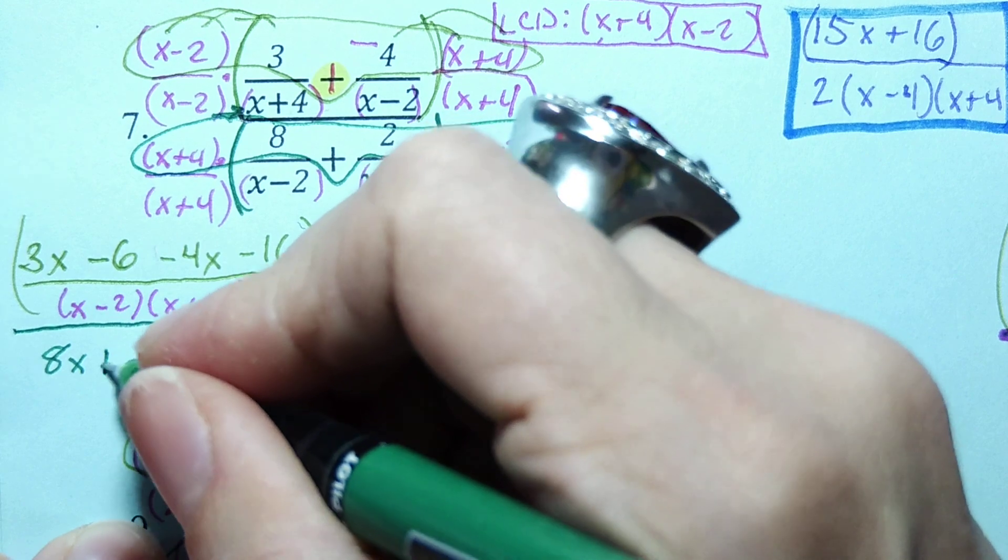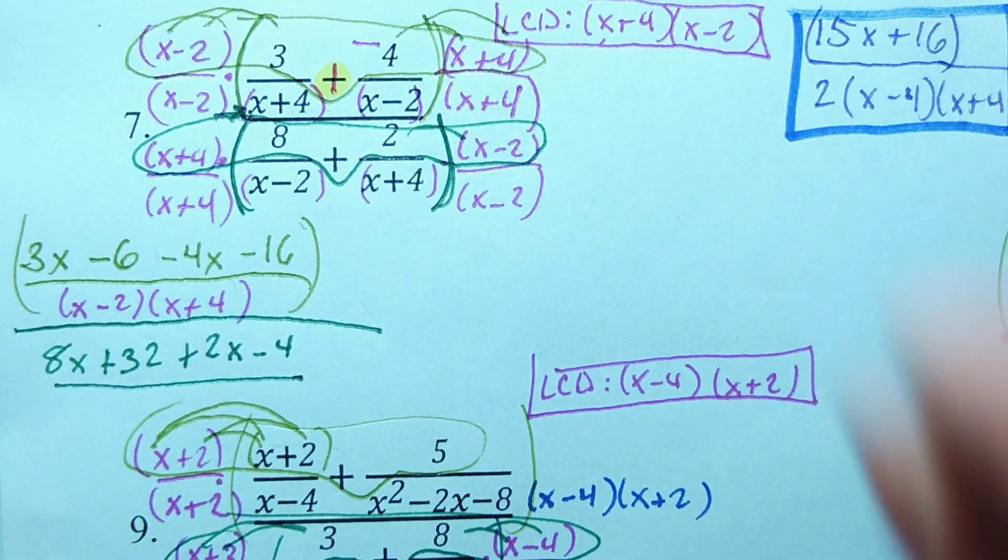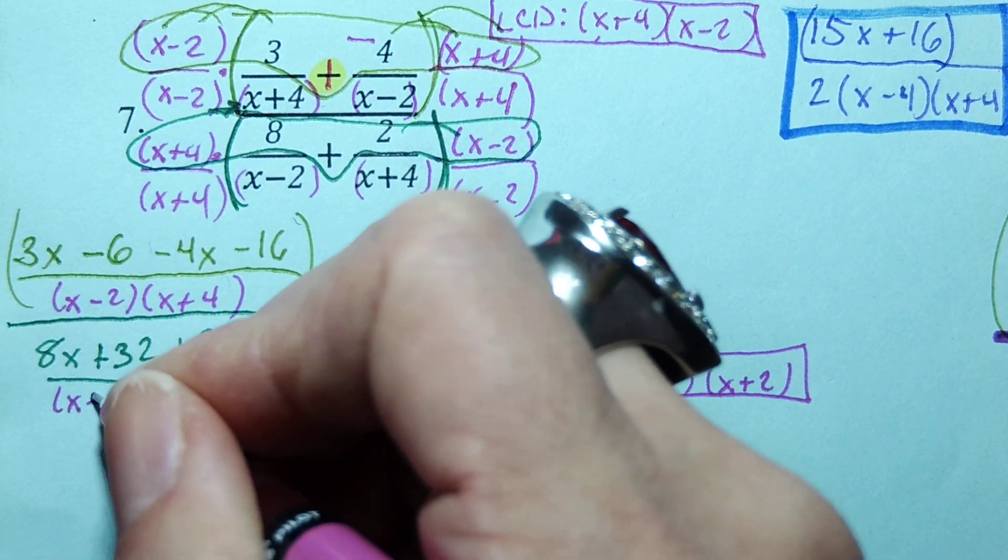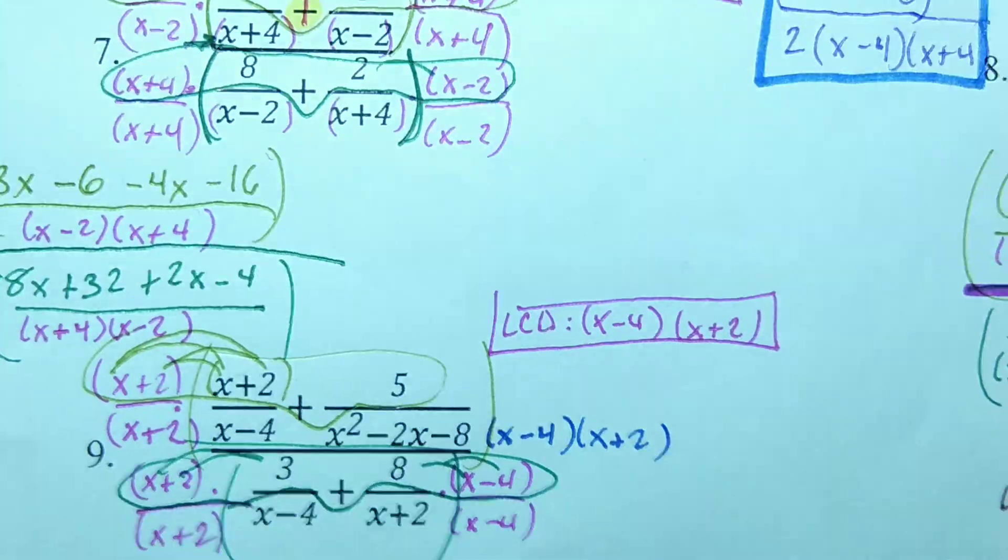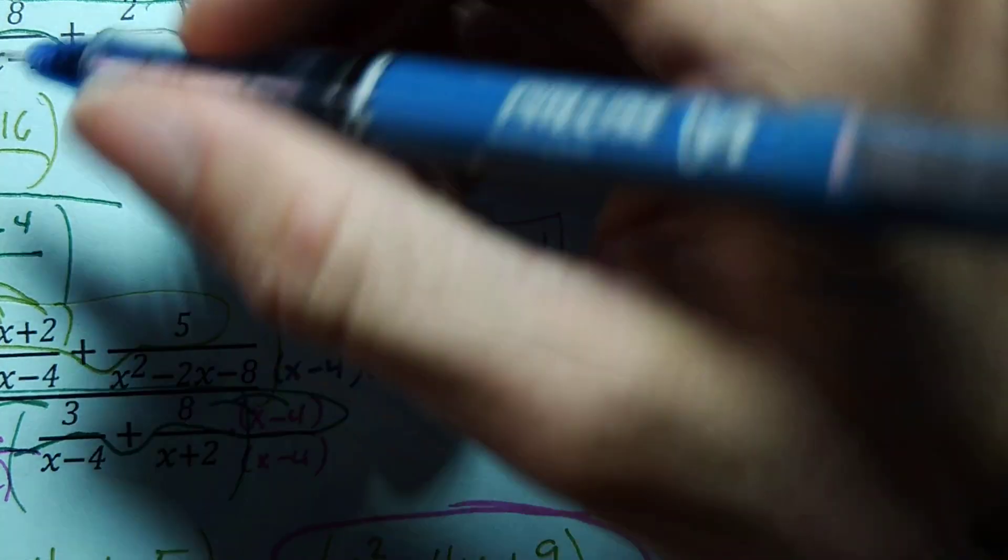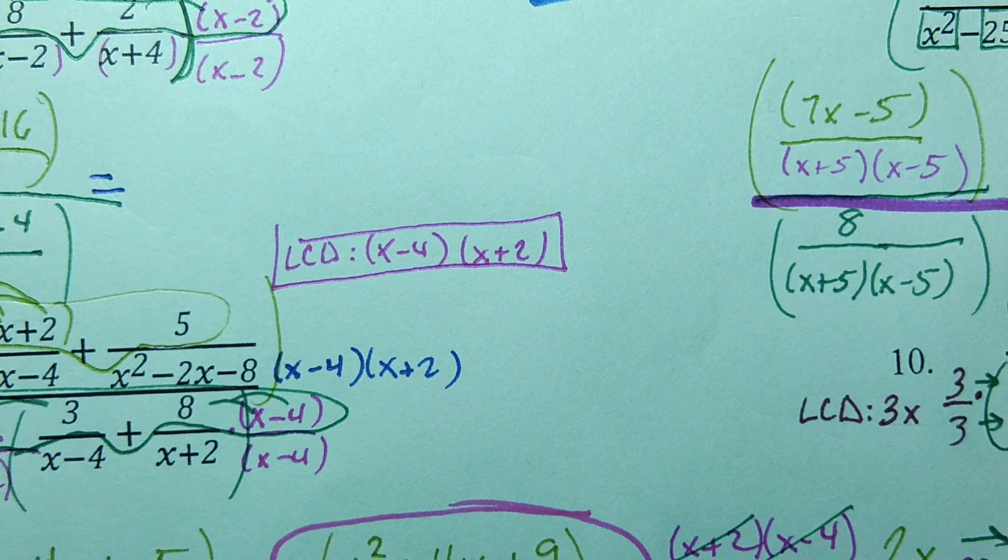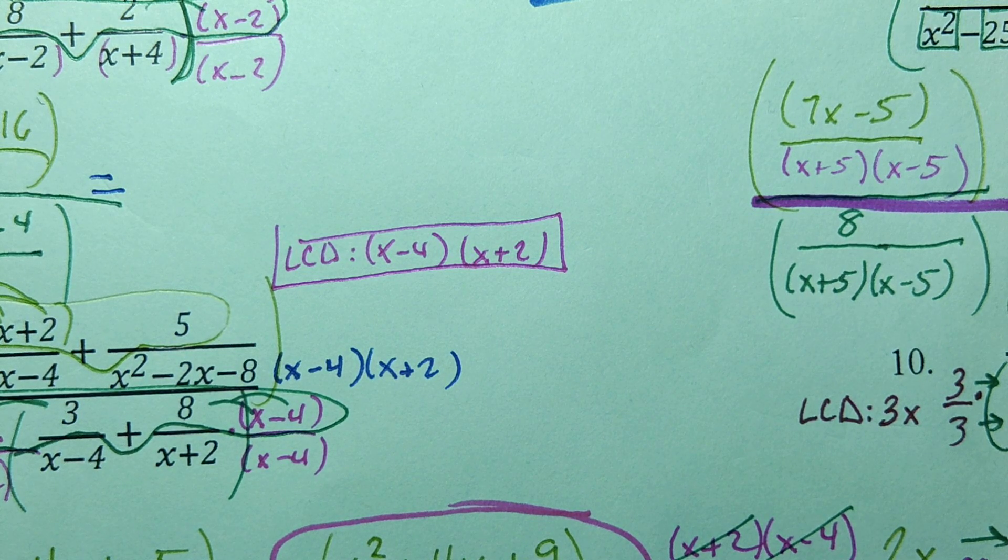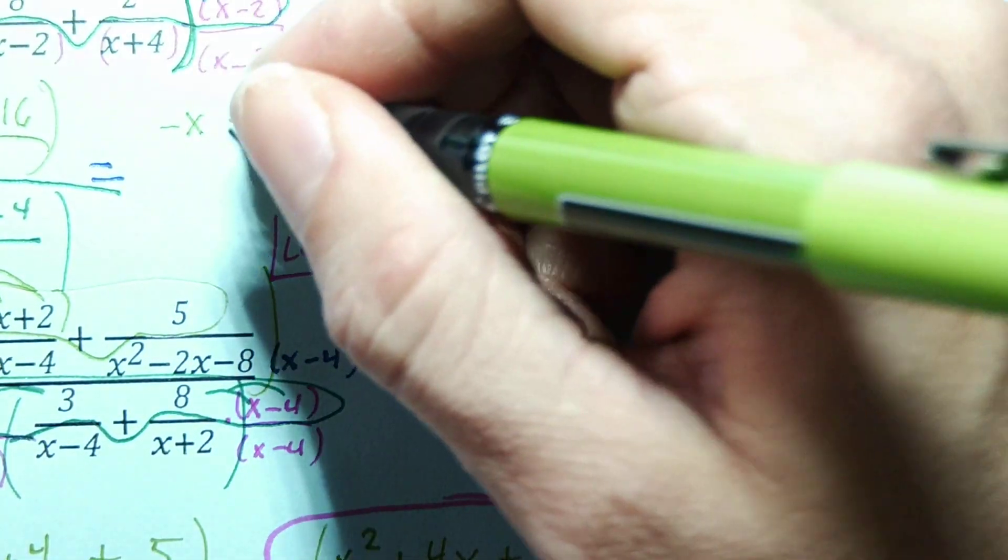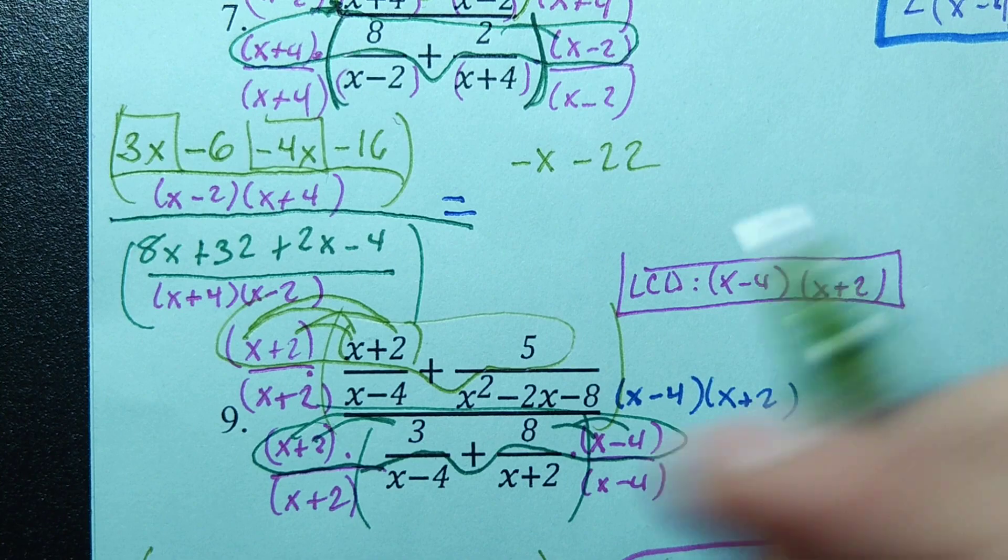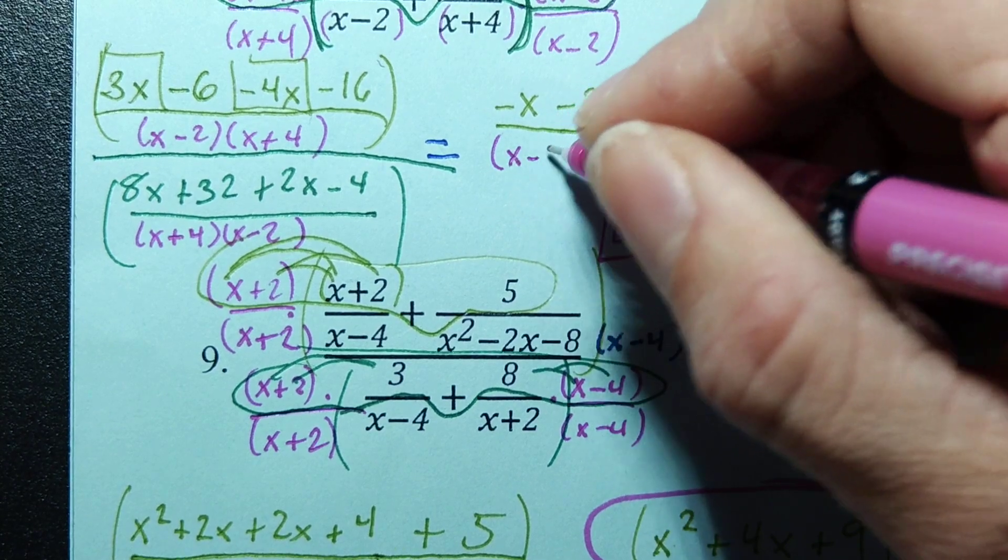So 8x plus 32, 2x minus 4, and this is all over x plus 4 times x minus 2, or the other way around. Combining our like terms together, 3x and negative 4x is negative x. Negative 22 when we add our negative 6 to the negative 16, and that is all over that common denominator.